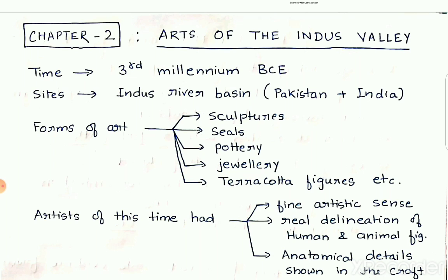The earliest evidence of civilization we have is in the Indus Valley civilization, with a time period of around the 3rd millennium BCE. The sites are in the Indus Valley basin, spread across areas of Western India and present-day Pakistan. The art forms found in these areas include sculptures, seals, pottery, jewelry, and terracotta figures.